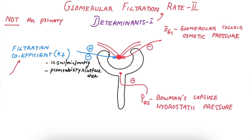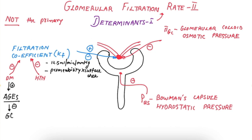The filtration coefficient is adversely affected by two conditions: diabetes mellitus and hypertension, both when they are chronic and not under control. Diabetes mellitus causes deposition of AGEs in the glomerular capillaries, which damages them and thereby decreases the GFR.